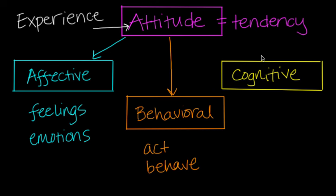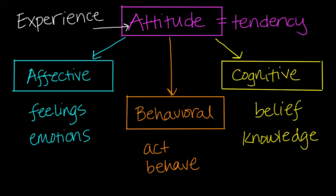And in the last component, the cognitive component, we're going to form some sort of belief, or we may have knowledge about an object or subject that forms our attitude. For example, "I believe spiders are dangerous" — we believe that because we've probably experienced or observed something that caused us to hold that belief. That's the cognitive component, and all together, these components form the ABC model of attitudes.